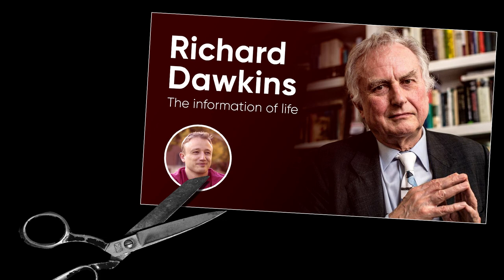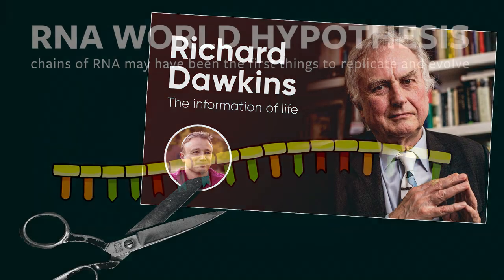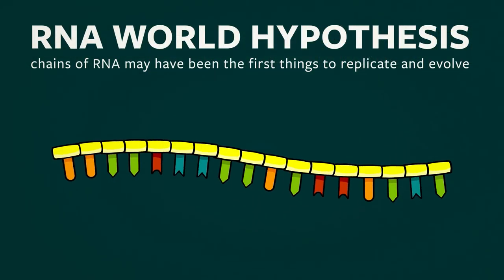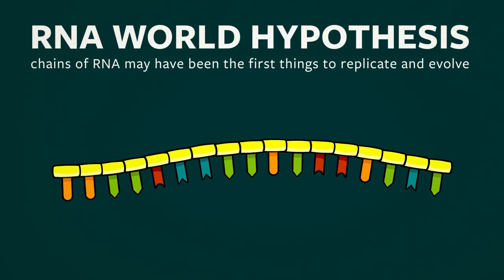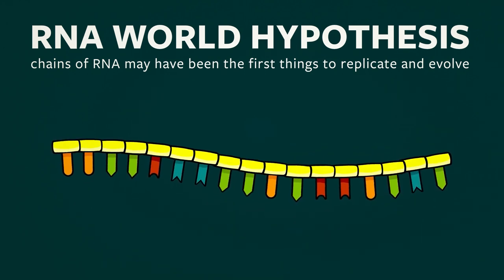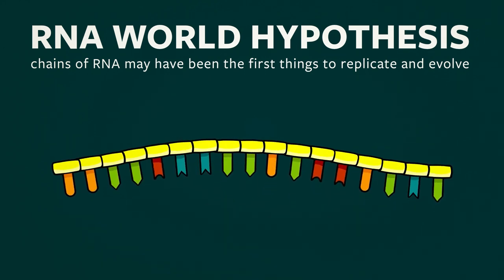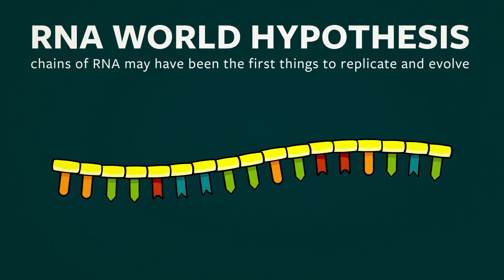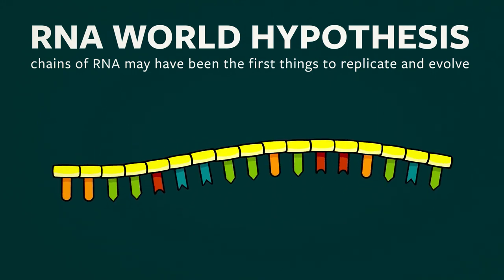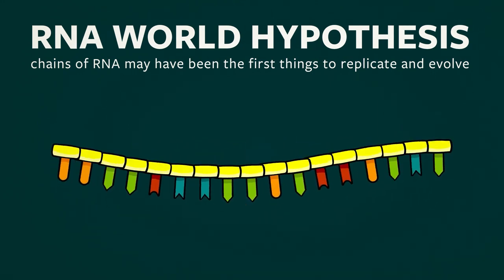Today's clip needs a little bit of setup before I throw you in. Richard Dawkins and I were talking about the RNA world hypothesis — the idea that RNA, or something like RNA, was the first replicator to come into existence.